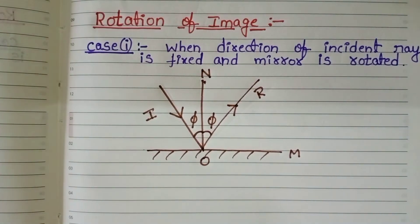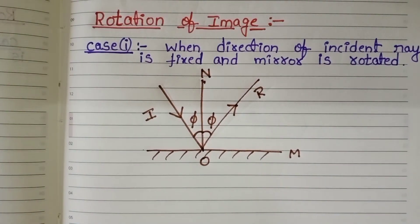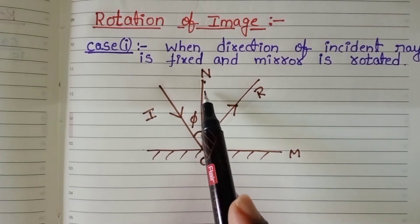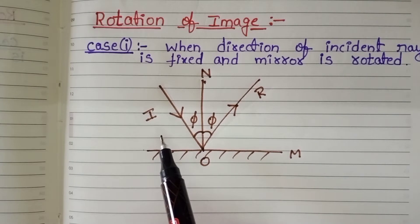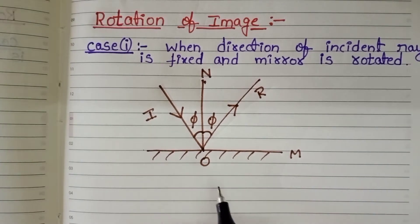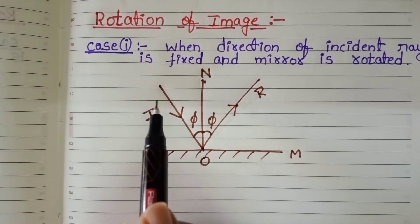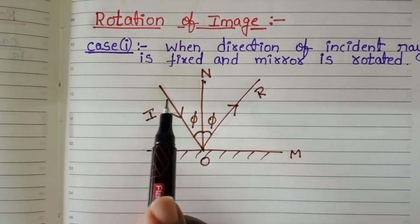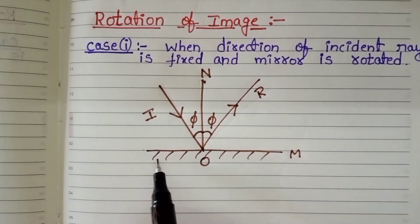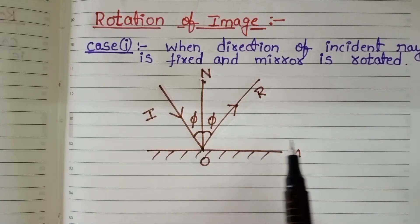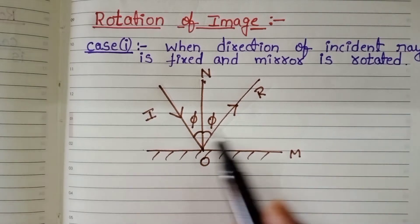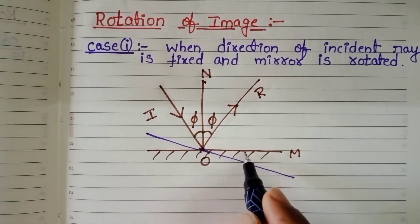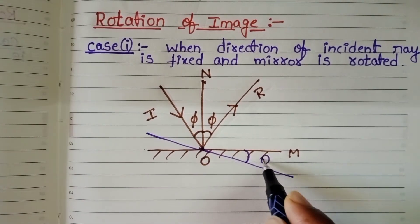The reflected ray also makes the same angle with the normal. Why? Because we know angle of incidence is equal to angle of reflection. So, where I is the incident ray, N is the normal, and R is the reflected ray. The incident ray is fixed in its position — there is no change. But the plane mirror is rotated through an angle theta. The angle of rotation of the plane mirror is theta.